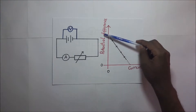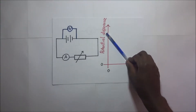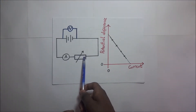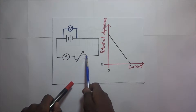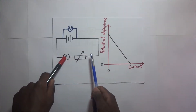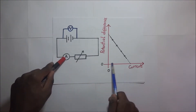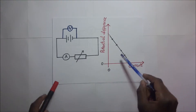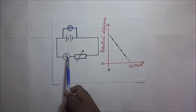Right here we have a PD-current graph, and we can see that it has a negative gradient. When we regulate this rheostat or variable resistor, we regulate the amount of current flowing through this circuit. For every amount of current we attain, we measure off the voltage, getting different amounts of current and different corresponding voltages — that's how we plot this graph.